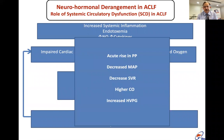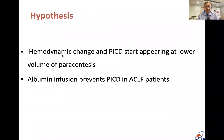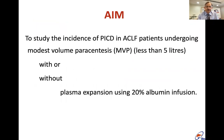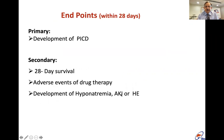This leads to a very high rise in portal pressure and development of ascites. Our hypothesis was that hemodynamic changes are much more severe in ACLF, so PICD could develop at a lower volume of paracentesis — less than five liters — and that albumin infusion, which is not currently recommended for less than five liters, might be helpful. We aimed to study the incidence of PICD in ACLF patients undergoing modest-volume paracentesis with or without plasma expansion using 20 percent albumin, with primary outcomes of PICD incidence, effect of albumin on survival, and adverse events.